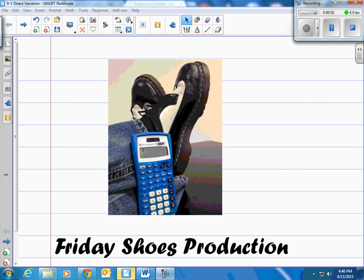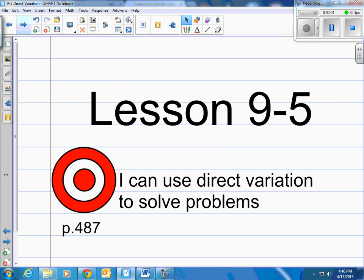This is a Friday Shoes production. This is lesson 9-5 in our books on page 487 and our target is I can use direct variation to solve problems.